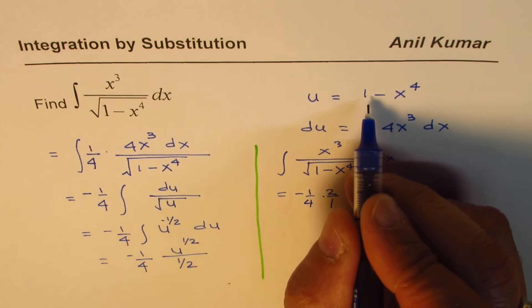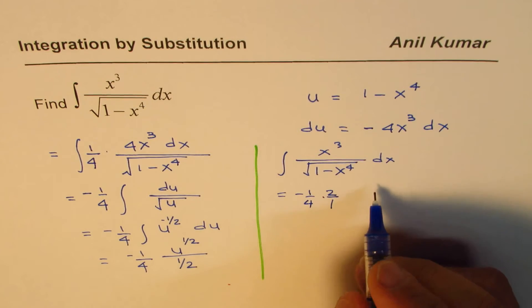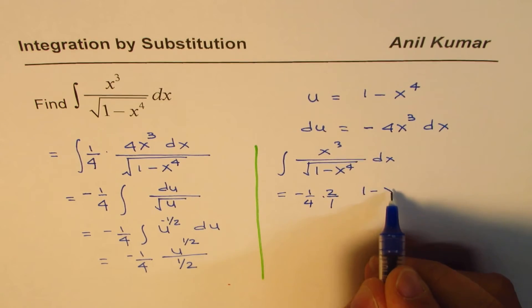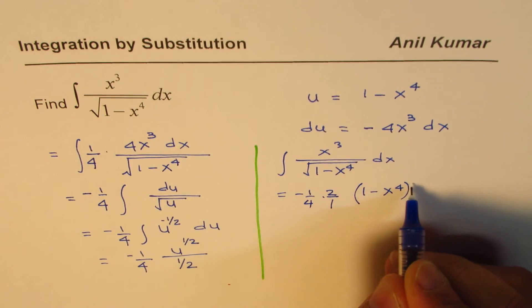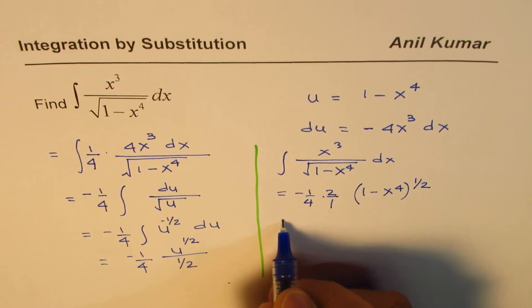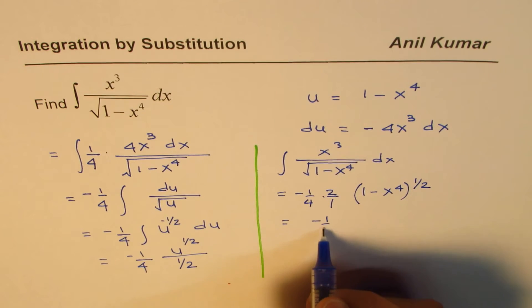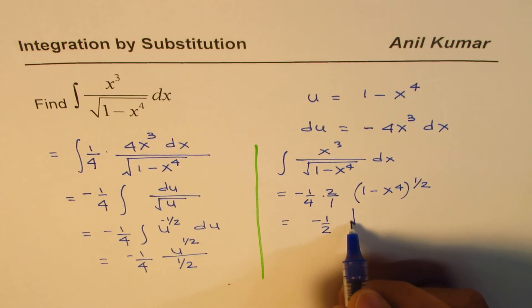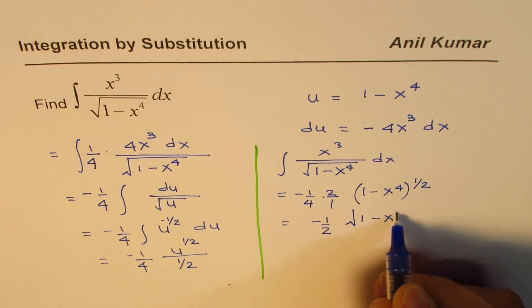And u can be replaced by 1 minus x to the power of 4, 1 minus x to the power of 4, to the power of half. Which is same as minus half, and that is square root of 1 minus x to the power of 4.